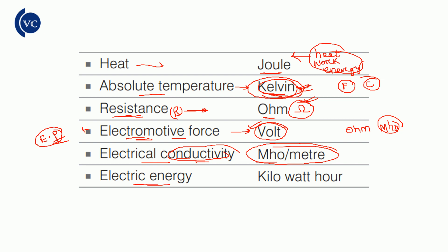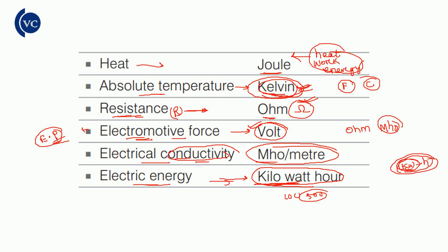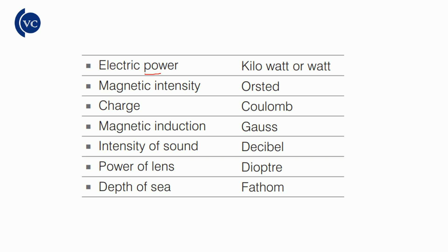Electric energy — the unit is kilowatt hour. Electric energy is represented as power multiplied by time: kilowatt into hour. So electric power is in kilowatt and time is in hours, giving the electric energy unit as kilowatt hour.